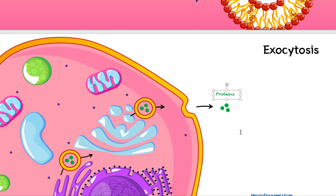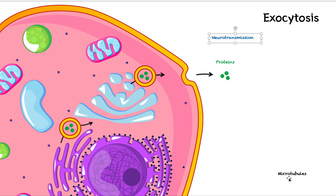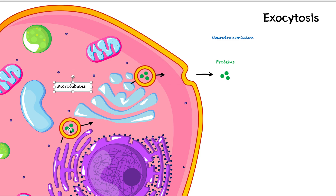You just need to know it's big molecules or molecules traveling in bulk. One real-life example is neurotransmission — when your neurons, the cells in your nervous system, communicate with one another by sending neurotransmitter molecules. They send those neurotransmitters by exocytosis. Lastly, these vesicles don't just float around freely — they travel on little pipe-like structures called microtubules, dragged along like a roller coaster. That's it for endocytosis and exocytosis!